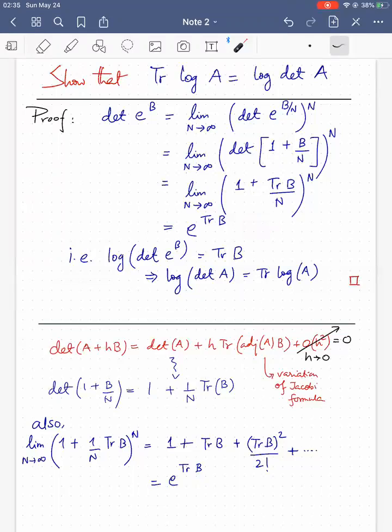So now we take log on both sides. So we get log of determinant of e to the B, and log of this thing is just trace of B, and then that gives us the result that log of det A is equal to trace of log A.